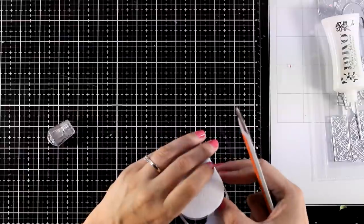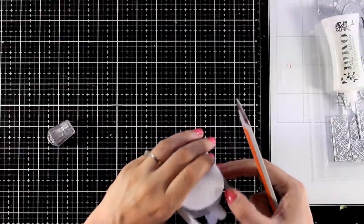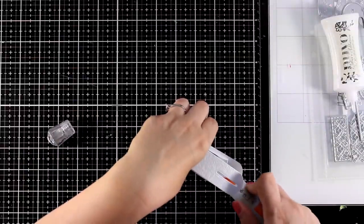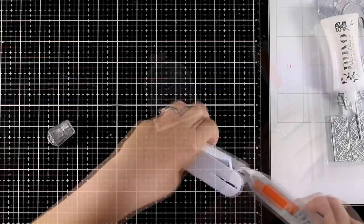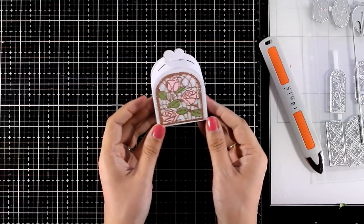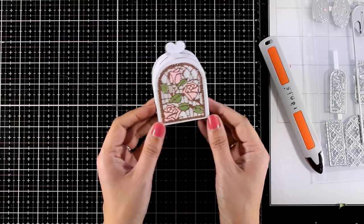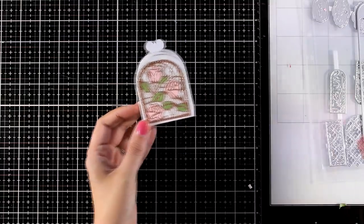You can also die cut one of the little tags and wrap it around just like I did with the first box. I decided to leave it as it is. I think it looks stunning with this beautiful stained glass look.